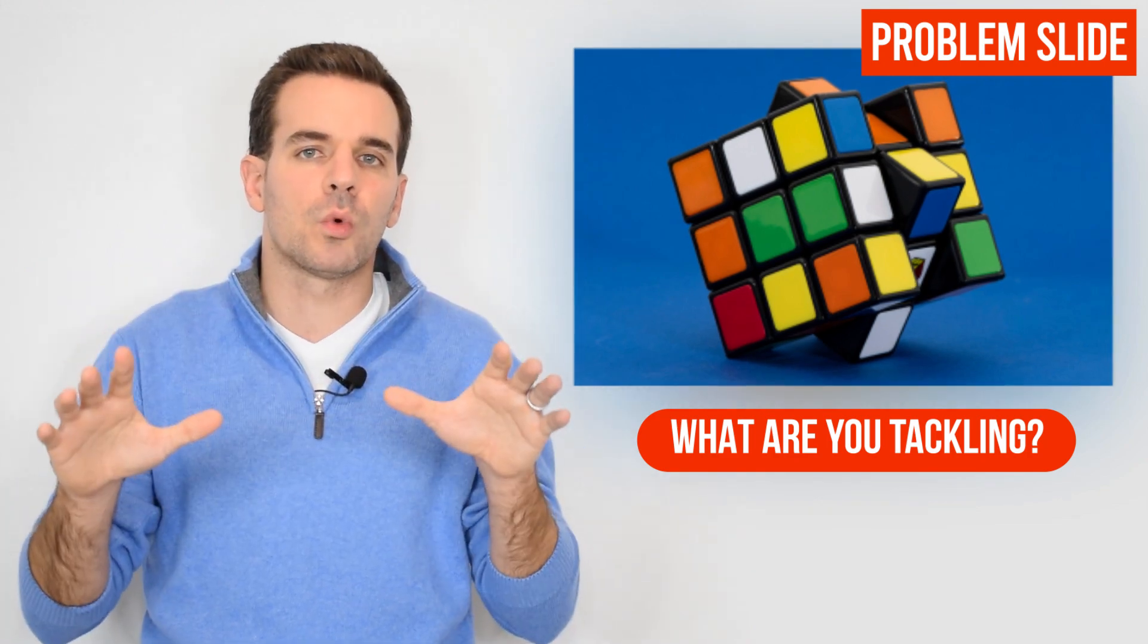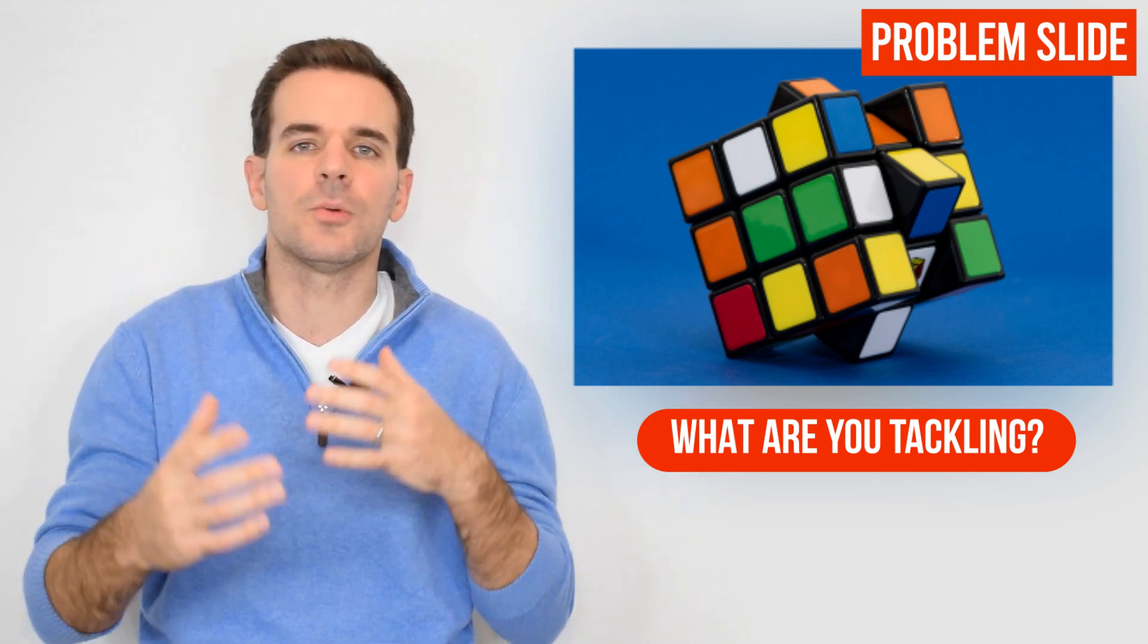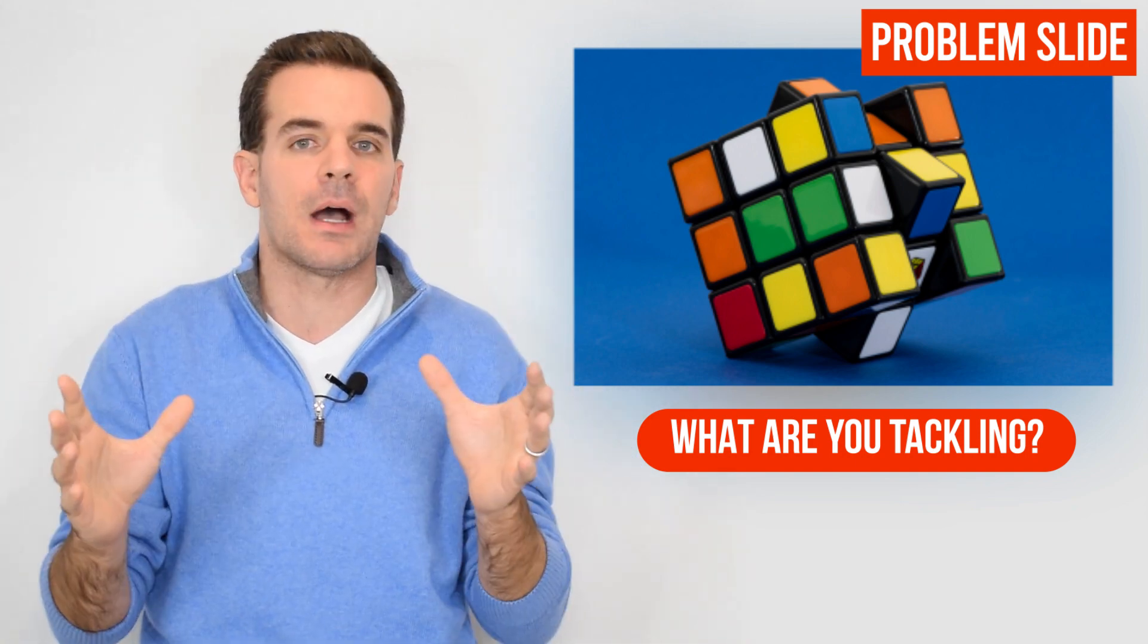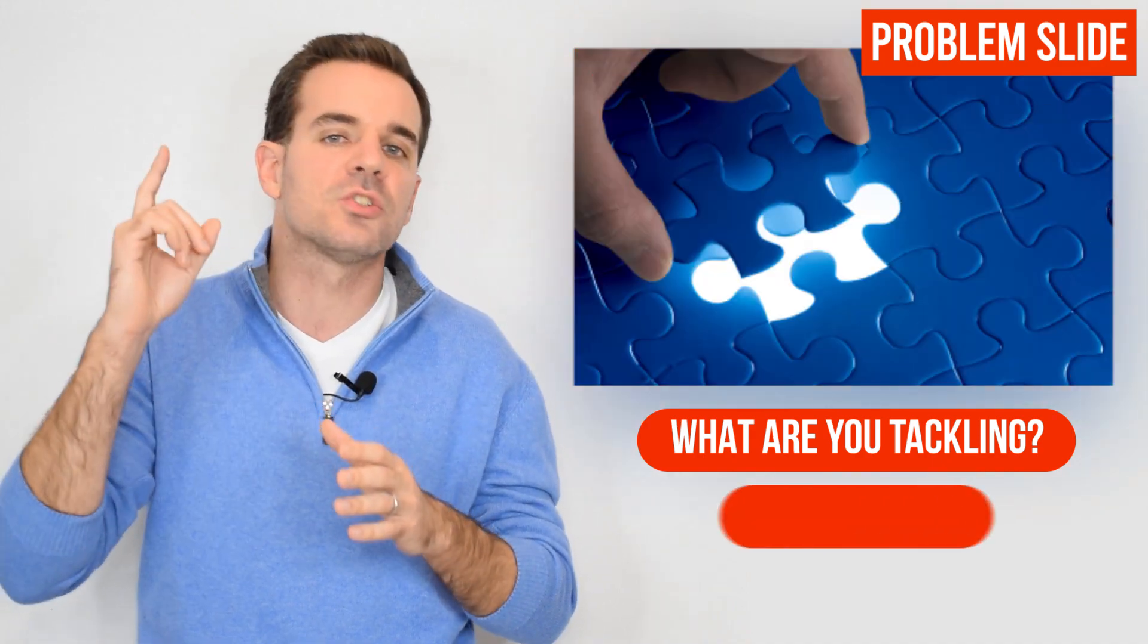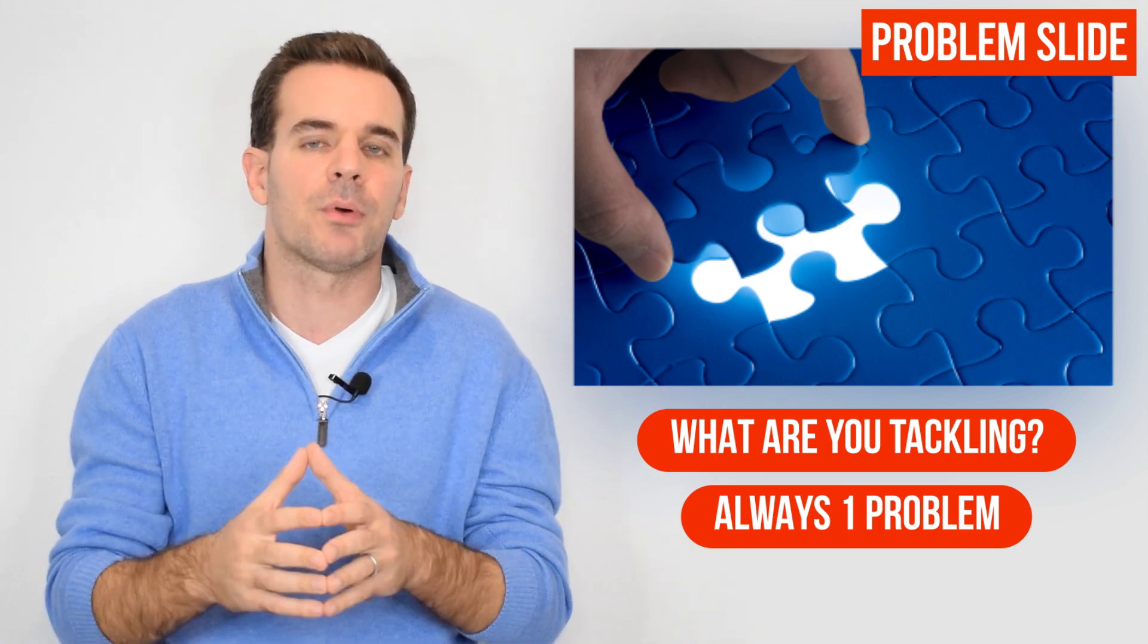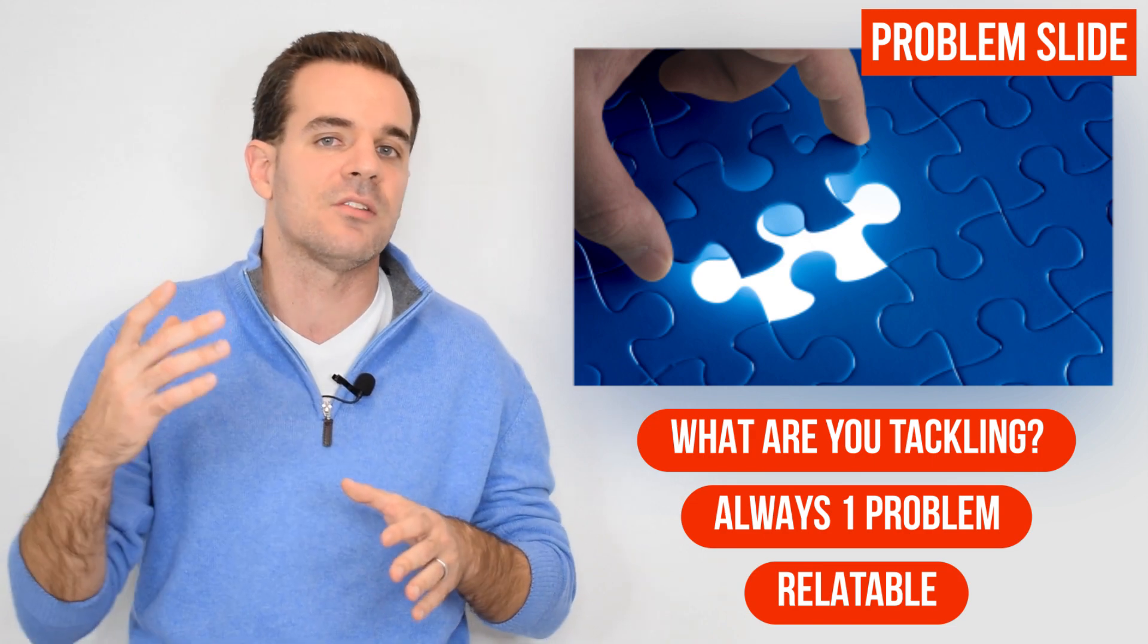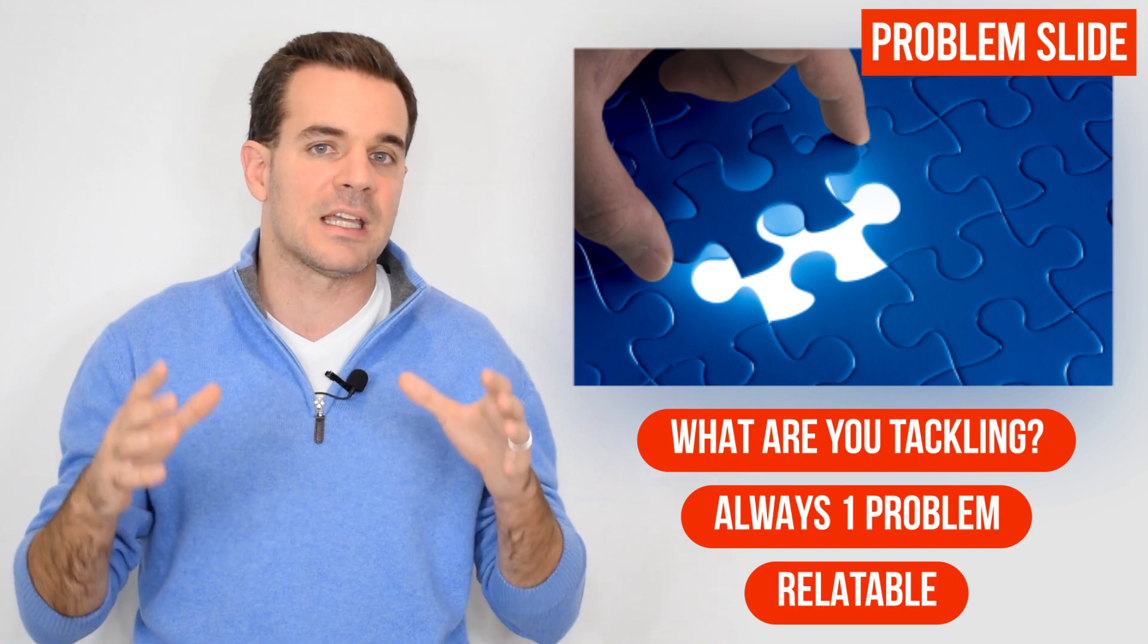Then you go into the problem slide. The problem slide is essentially what you're tackling. Think about a world where your company doesn't exist. Think about that day where you really started incubating that frustration because there was a gap that you saw in the market, and you were thinking about something that you could do about it. But again, it's all about the problem, and the problem is always one. It's not going to be two. It's not going to be three. It's always one problem that you encounter, and it needs to be a problem that perhaps the investor can relate to. It needs to be something that they either experience themselves or maybe a family member, but it needs to be something that they can relate to.